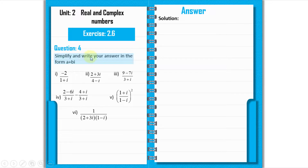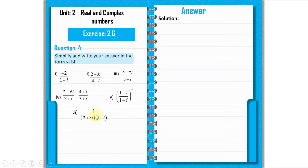Simplify and write your answer in the form of a plus bi. These are our parts of the question: 1, 2, 3, 4, 5 and 6. We will solve them one by one, starting with question number 4, part 1.